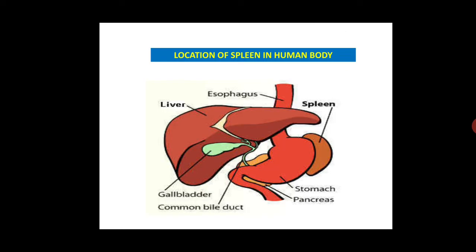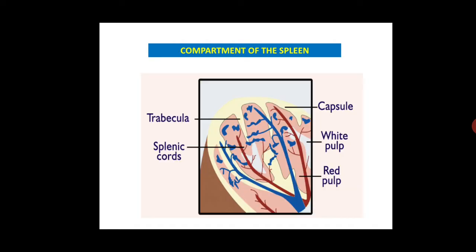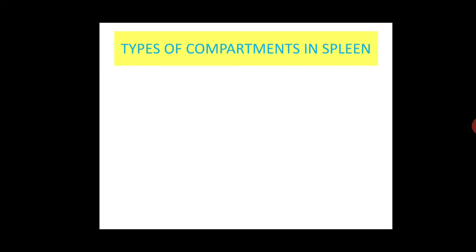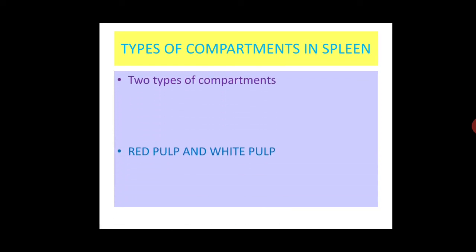The spleen is located in the left abdominal cavity above the stomach. It is an ovoid encapsulated structure. In this diagram, the light yellow color represents the capsule. Projections called trabeculae extend from the capsule toward the interior, creating a number of compartments. There are two types of compartments in the spleen: red pulp and white pulp.